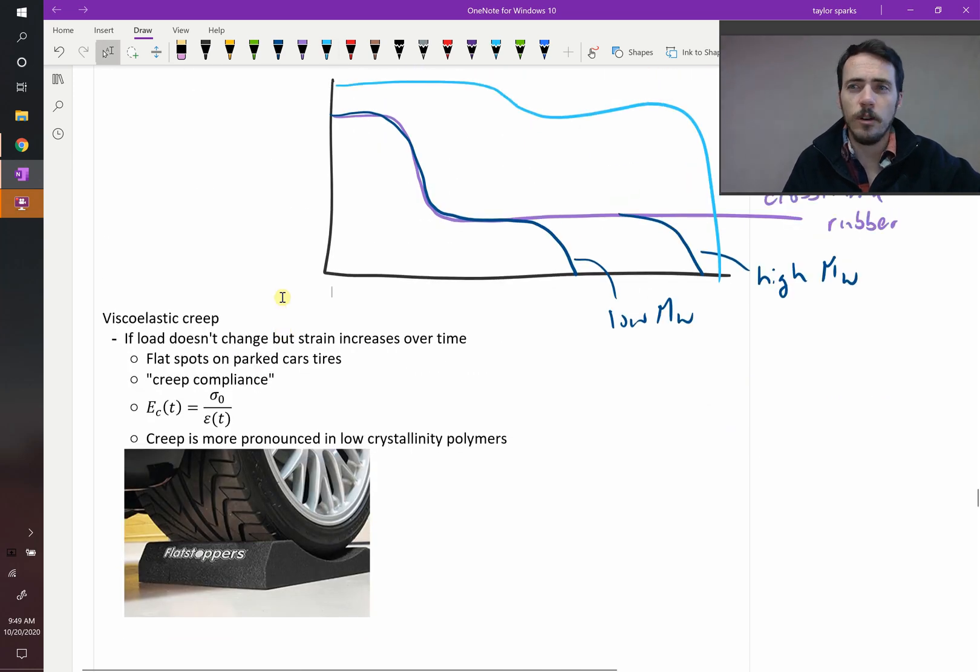Something else that we should know about viscoelasticity is that you can get viscoelastic creep, since things are flowing over time. If you let it sit for a long time, you can get strain accumulating. That's why you'll see these flat stoppers on tires. If you've got a show car that you're not going to be driving it very often to change the tires, it's going to sit parked, maybe a camper might have these too. They put these flat stoppers to prevent viscoelastic creep from giving you lumpy tires that then don't drive well. It prevents flat spots in tires. Creep is more pronounced in low crystallinity polymers. The more crystalline your polymer is, the more it's going to resist deformation over time, and so if you have low crystallinity, like rubbers, then it's going to be more likely to have this happening.